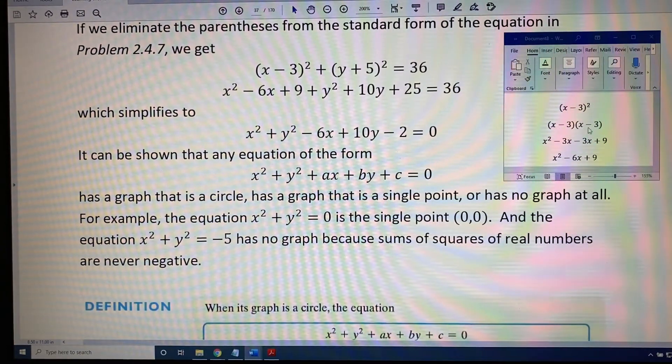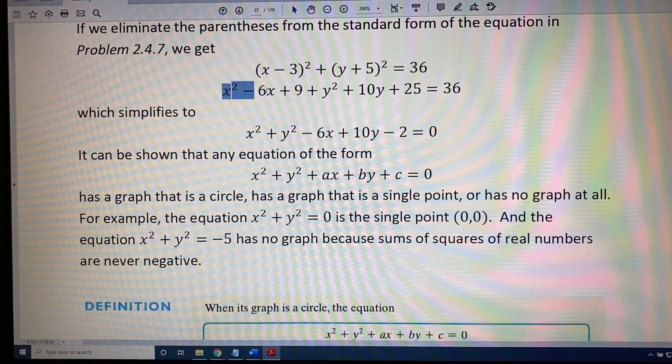Using FOIL on (x - 3)(x - 3) gives me these four terms: x² - 3x - 3x + 9. And when I combine the like terms in the middle, I get x² - 6x + 9, which is where this came from: x² - 6x + 9.